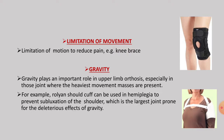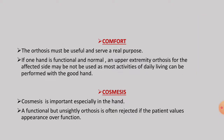Gravity plays an important role in upper limb orthosis, especially in joints where the heaviest movement masses are present. For example, a roll-line shoulder cuff should be used in hemiplegic patients to prevent subluxation of the shoulder, which is the largest joint prone to the detrimental effect of gravity. Comfort is also important: the orthosis must be useful and serve a real purpose. If one hand is functional and normal, an upper extremity orthosis for the affected side may not be used, as most activities of daily living can be performed with the good hand.